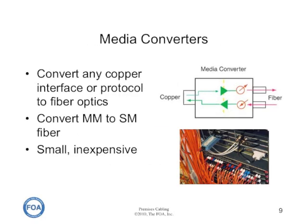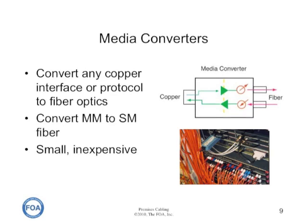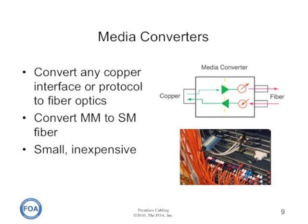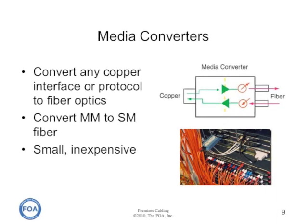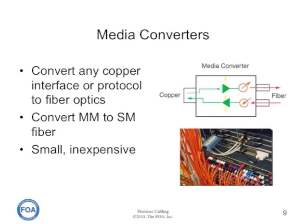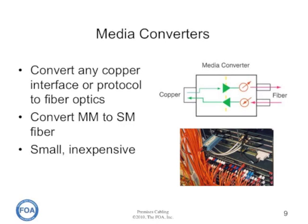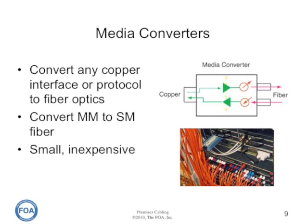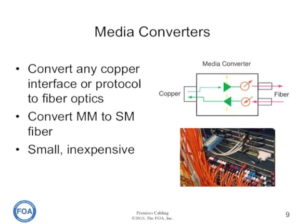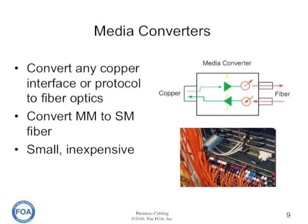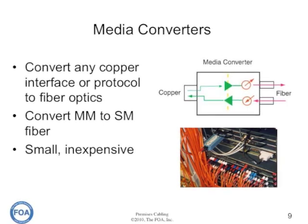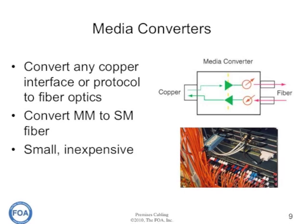Most high-end communications equipment is available with fiber optic ports directly. But for those that only have copper ports, you can buy a media converter. A media converter is basically nothing but a transceiver — like that fiber optic data link we were just looking at — with a transmitter and a receiver that interfaces directly to a copper port. You can also use them to convert multi-mode fiber to single-mode fiber. They're typically very small and very inexpensive, like the little blue box you see on the equipment here.